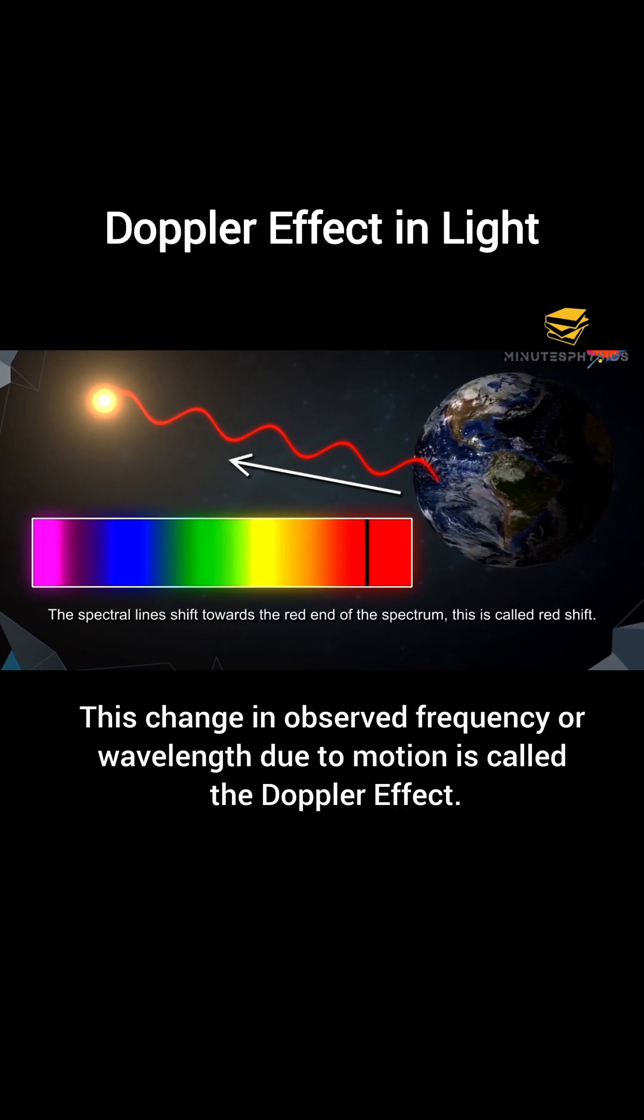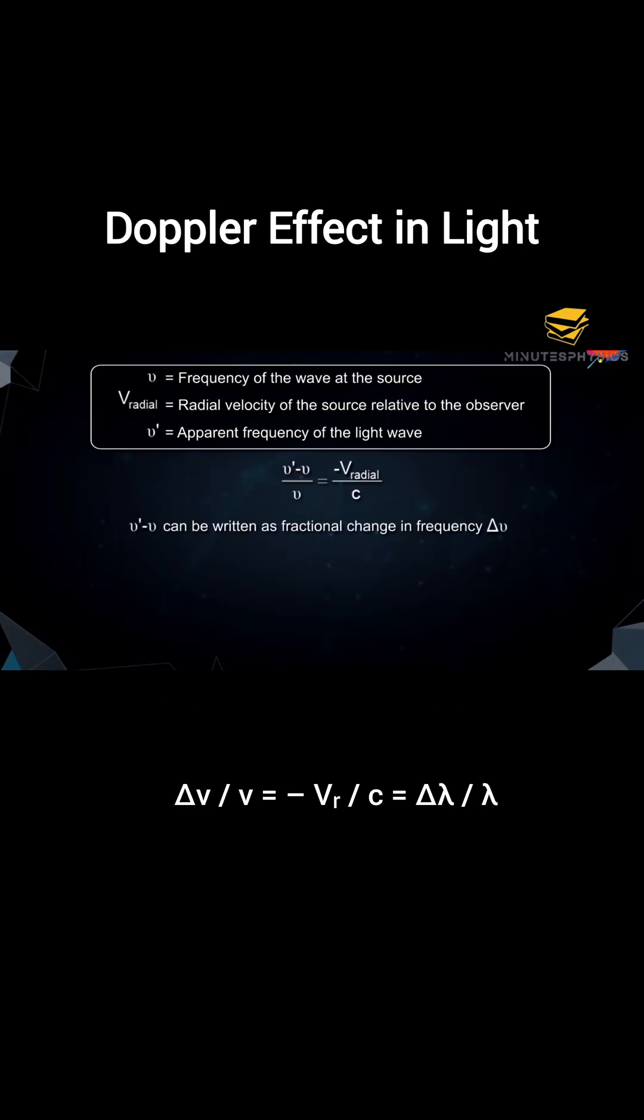This change in observed frequency or wavelength due to motion is called the Doppler effect. The formula for fractional change in frequency is negative V radial by C, which is the same as fractional change in wavelength.